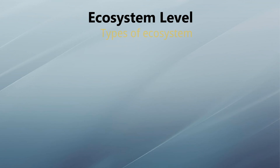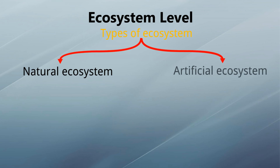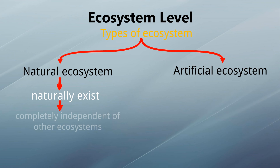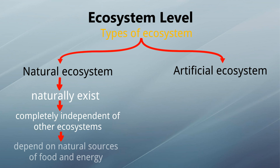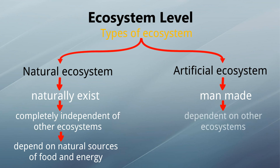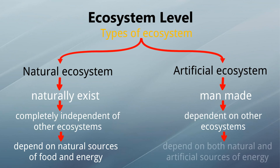There are two main types of ecosystem: natural and artificial. Natural ecosystems are naturally existent and completely independent of other ecosystems; they depend on natural sources of food and energy, including solar energy and water bodies. Artificial ecosystems are man-made and dependent on other ecosystems, depending on both natural and artificial sources of energy.